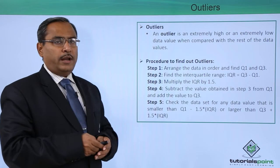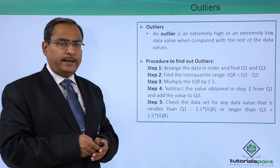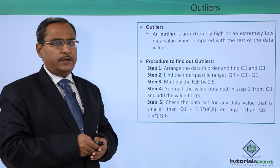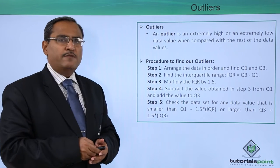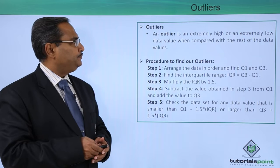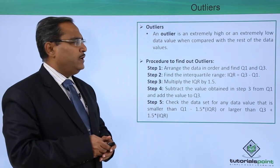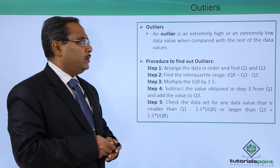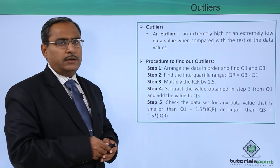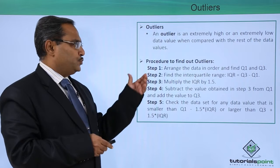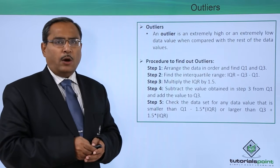Now we shall discuss outliers. These outliers are very important, and in machine learning we'll be using this terminology in multiple different places. An outlier is an extremely high or extremely low data value when compared with the rest of the data values.